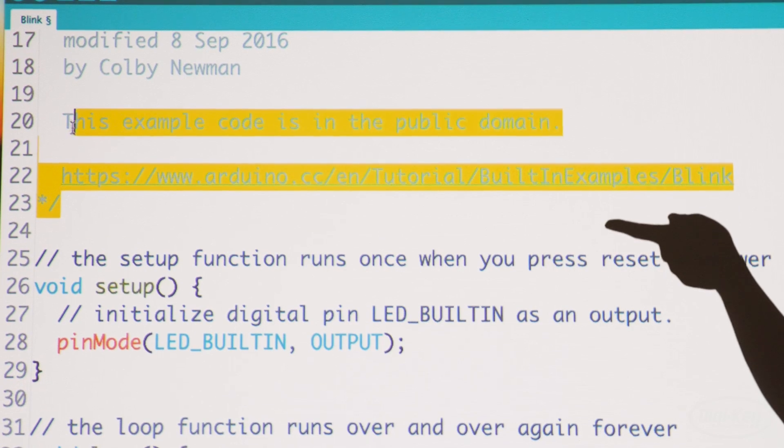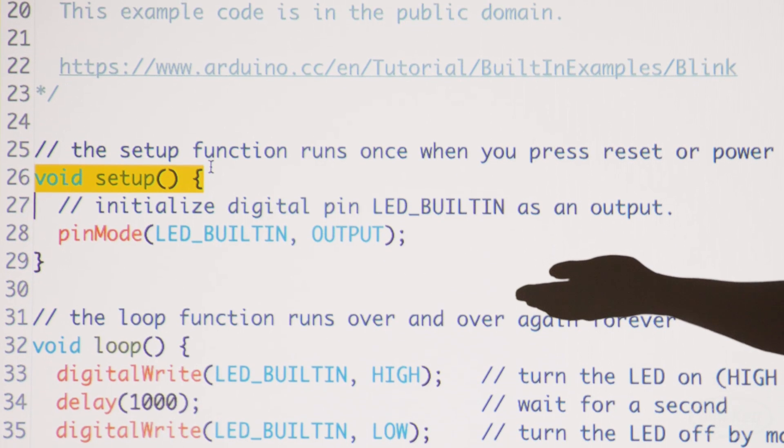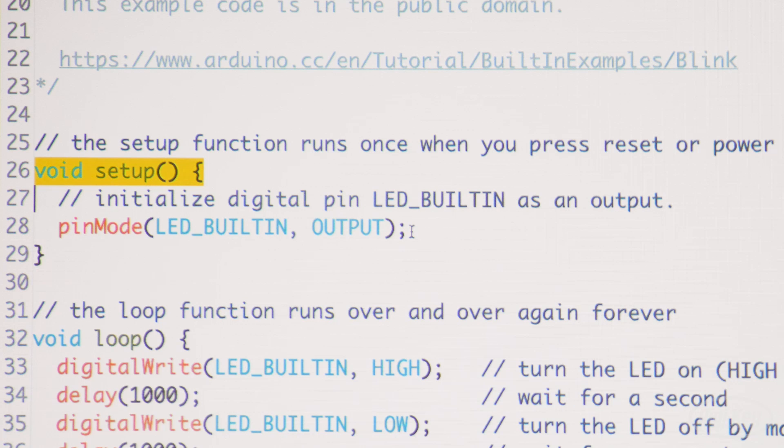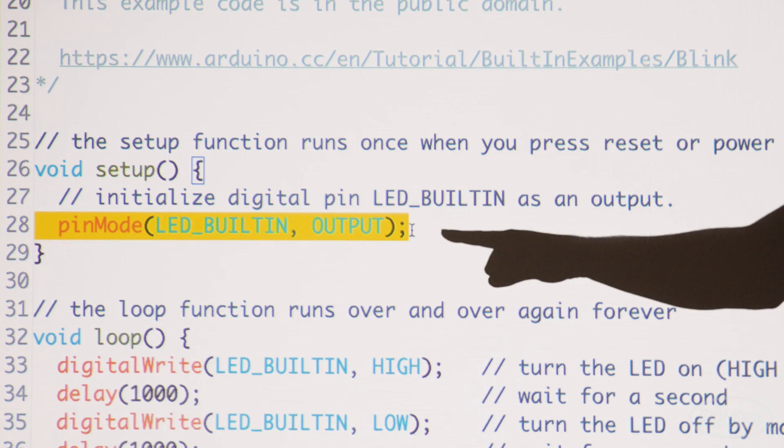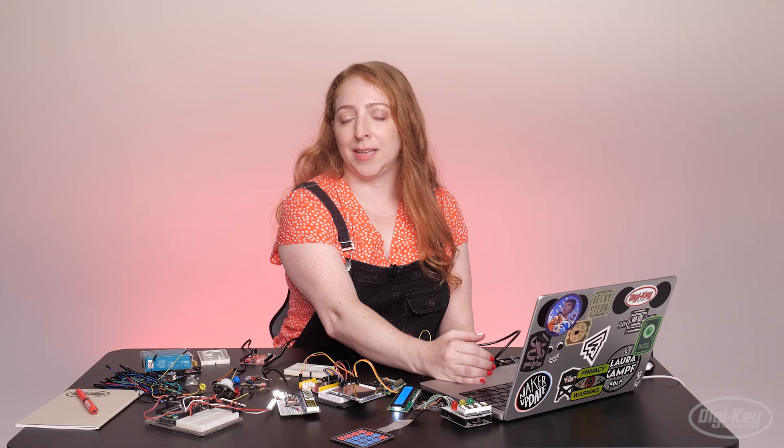This first section is a block comment, followed by the code's setup, which is used to set up things your program will need later. It runs once when the program starts up. Our blink sketch setup configures pin 13 as an output, which prepares the board to send signals to it rather than listen.